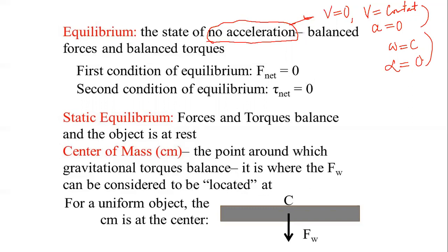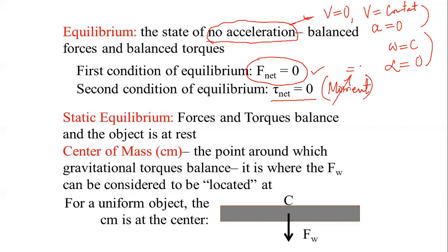The first condition of static equilibrium is that the net force acting is zero — this is common to both static and dynamic equilibrium. The second condition is that the net torque or net moment due to the combined effect of the force system is zero. There should be no moment, and the object is at rest under static equilibrium.